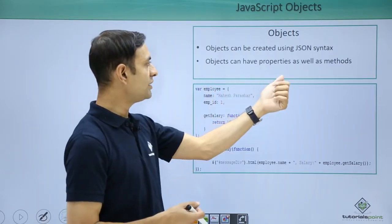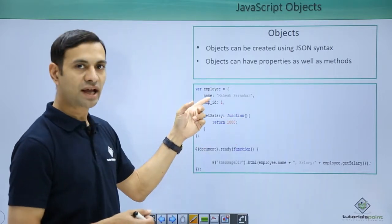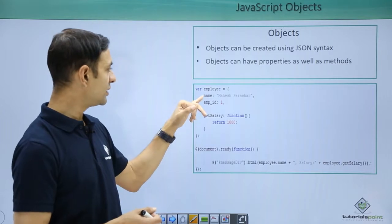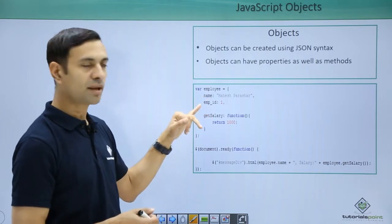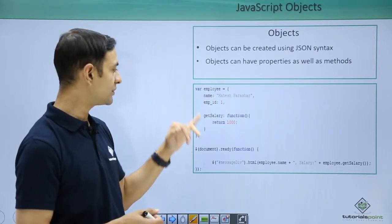Then objects can have a property as well as methods. Let's see an example where I have created an employee object with properties name and employee id. Name is Mahesh Parasha, employee id is one, the value assigned to the variables.